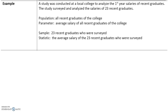Here's an example. A study was conducted at a local college to analyze the first-year salaries of recent graduates. The study surveyed and analyzed salaries of 23 recent graduates. The population is all recent graduates of the college, and the parameter is the average salary of all recent graduates. The sample is just the 23 graduates who were surveyed, and the statistic is the average salary of those 23 graduates. The study takes the statistic from the sample to make a conclusion about the parameter of the population.